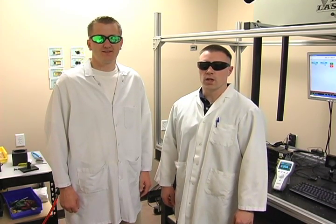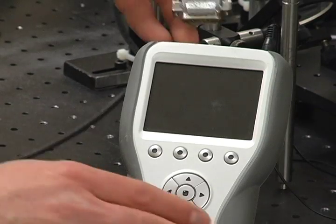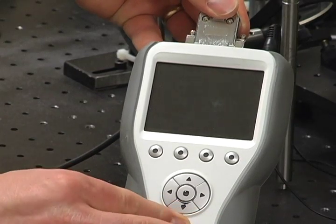Without being able to see the beam, unless it's on, we'll have to align it by predicting where the beam should be. Now we plug the smart head into the meter and turn on the meter.